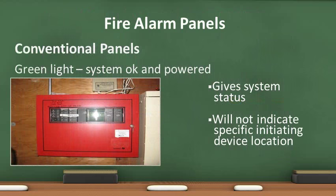There are two main types of fire alarm panels: conventional and addressable. A conventional panel has green, yellow, and red lights indicating alarm system status. A green light indicates no initiating devices are activated and the system is functioning properly. A yellow light indicates an issue with the system itself. A red light indicates an initiating device has been activated. If there is a problem, the conventional panel will not indicate what the issue is or the specific location of the initiating device — you may only see a yellow light.